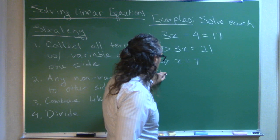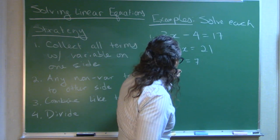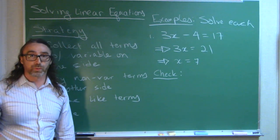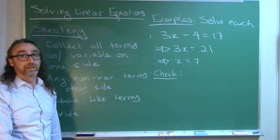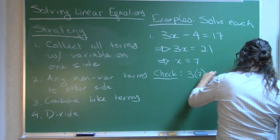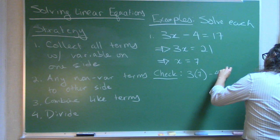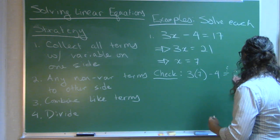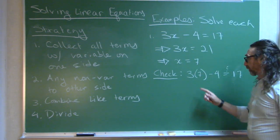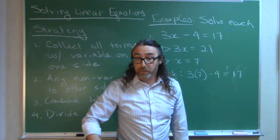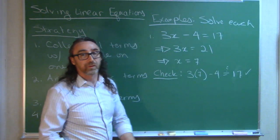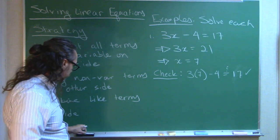You can always check your solution. Whenever you're solving an equation, take the proposed solution, plug it in, and see if it works out to be a true statement. So, 3 times 7 minus 4 — is that equal to 17? That's the value we have. 3 times 7 is 21, and 21 minus 4 is, in fact, 17. So it does work. That is the solution to our equation.